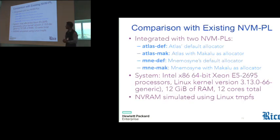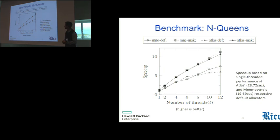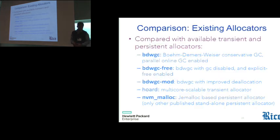We replaced the default allocator in two of the programming libraries that are available today, Atlas and Mnemosyne, where the suffix DEF defines the default allocator for this programming library. And we calculated the speed-up of using Makalu instead of these default allocators with the respective single-threaded performance of the programming library allocator. And clearly, the top two lines are for Makalu, and it has better speed-up than the default allocator.